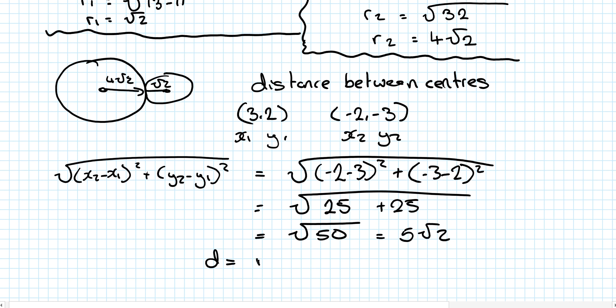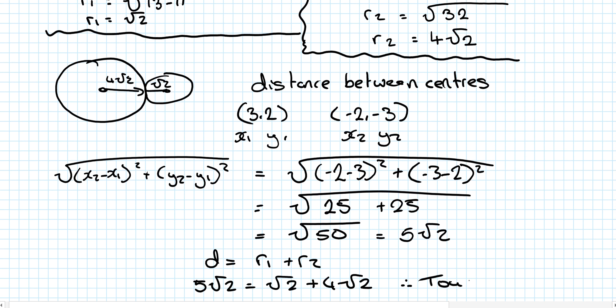d is equal to r1 plus r2. 5 root 2 equals root 2 plus 4 root 2. Therefore, they touch externally.